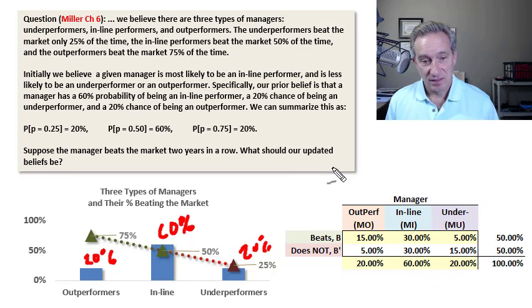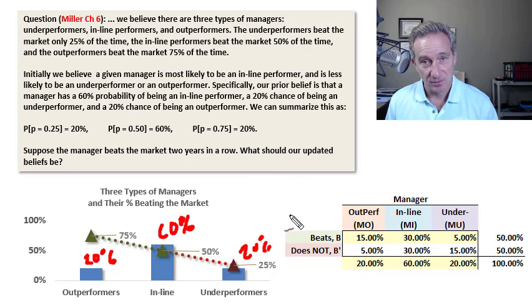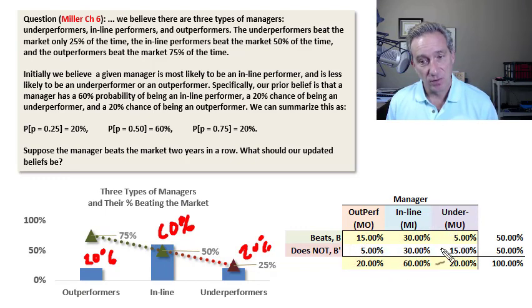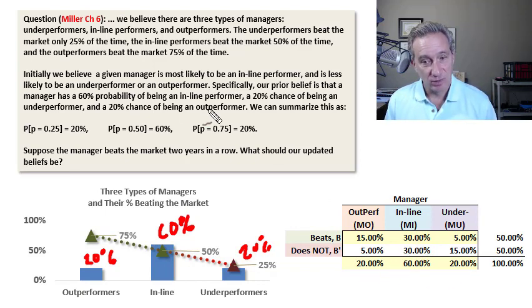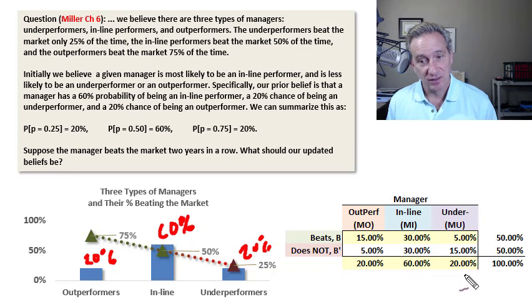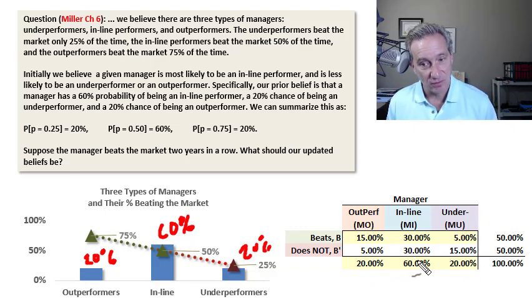Before going to the answer, I wanted to capture the assumption set in the probability matrix. The probability matrix by definition must sum to 100% in the joint probability cells. I've highlighted in yellow the input assumptions. Outperformers are 20%, inline are 60%, and underperformers are 20% — these are the unconditional, or marginal, probabilities outside the square. We're also told that if it's an outperformer, they beat the market 75% of the time, so that cell is 15%, and the remaining 5% goes to the other cell.